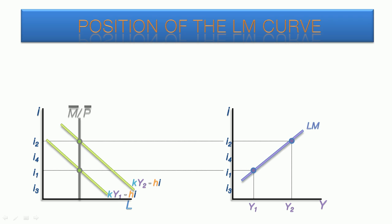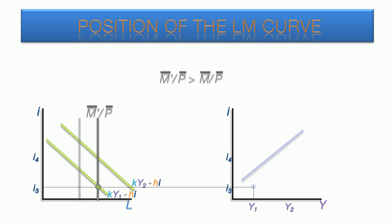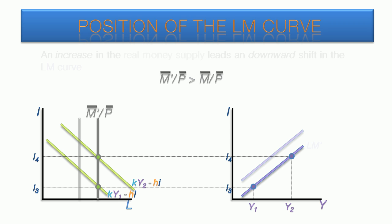As for the position of the LM curve, that is determined by the real money supply. An increase shifts the money supply line outward. The resulting equilibrium interest rates are lower. This results in a downward shift of the LM curve.